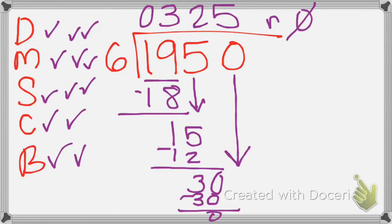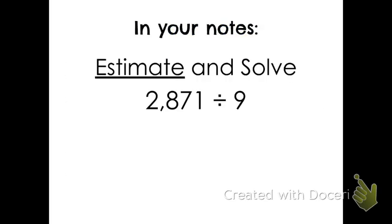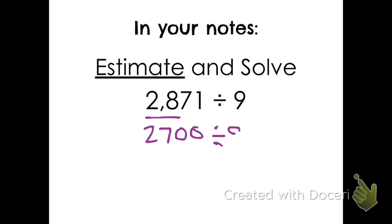The answer is three hundred twenty-five, remainder zero. So exactly three hundred twenty-five people can sit in each section of the stadium. Now we're going to look at the next problem: estimate and solve two thousand eight hundred seventy-one divided by nine. First I want to estimate, so I look at twenty-eight and nine. I'm trying to think of a compatible number — one that goes in evenly. I know that nine goes into twenty-seven because three times nine is twenty-seven. So I estimate twenty-seven hundred divided by nine, which gives me three hundred. My answer needs to be close to three hundred.